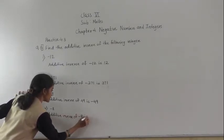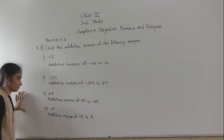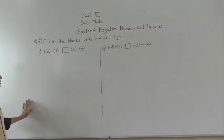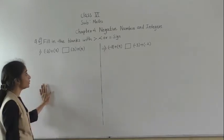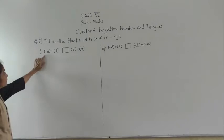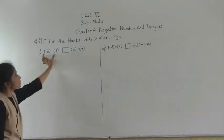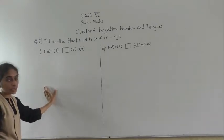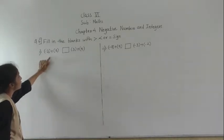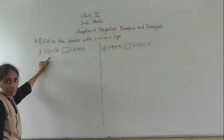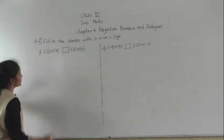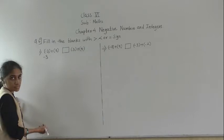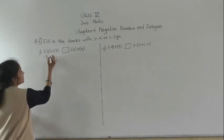Minus 8 is the answer. Question number 6: fill in the blanks with greater than, smaller than, or equal to. First, we will solve this side. We are going to open the bracket first. There is no sign here, which means plus. So plus minus gives minus 3, and plus plus gives plus A.